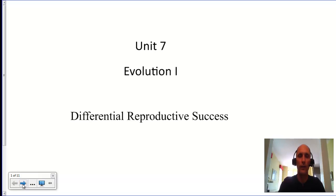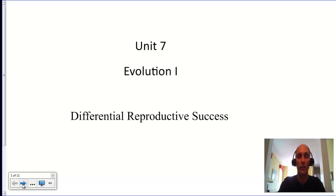I'd like to welcome you guys to unit 7. This is our first unit covering evolution, and our theme for this unit is going to be differential reproductive success. Just like in earlier units we talked about differential gene expression, this is going to be the key idea that Darwin has for how we get the origin of species and how species evolve.